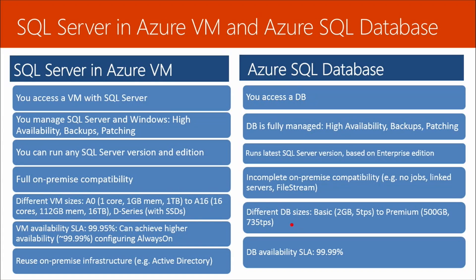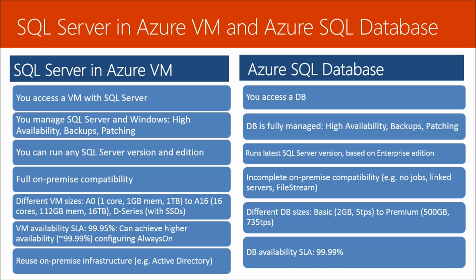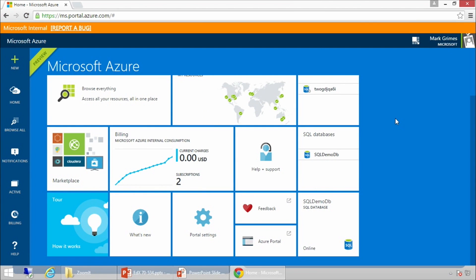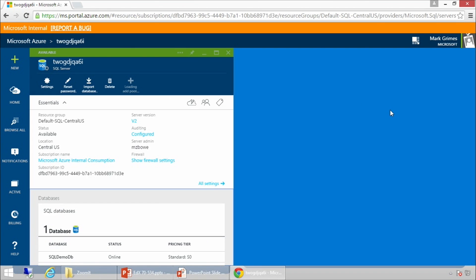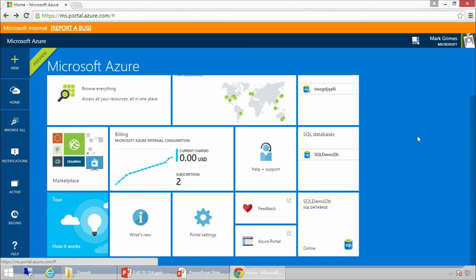Looking at different database sizes, you can get basic or premium tiers with different criteria used to manage them. Azure SQL Database provides an SLA of four nines — 99.99%. One last compatibility point: right now only SQL logins are supported with Azure SQL Database; you cannot use Windows integrated authentication. That's often baked into applications, so it's definitely something your security team needs to know about.